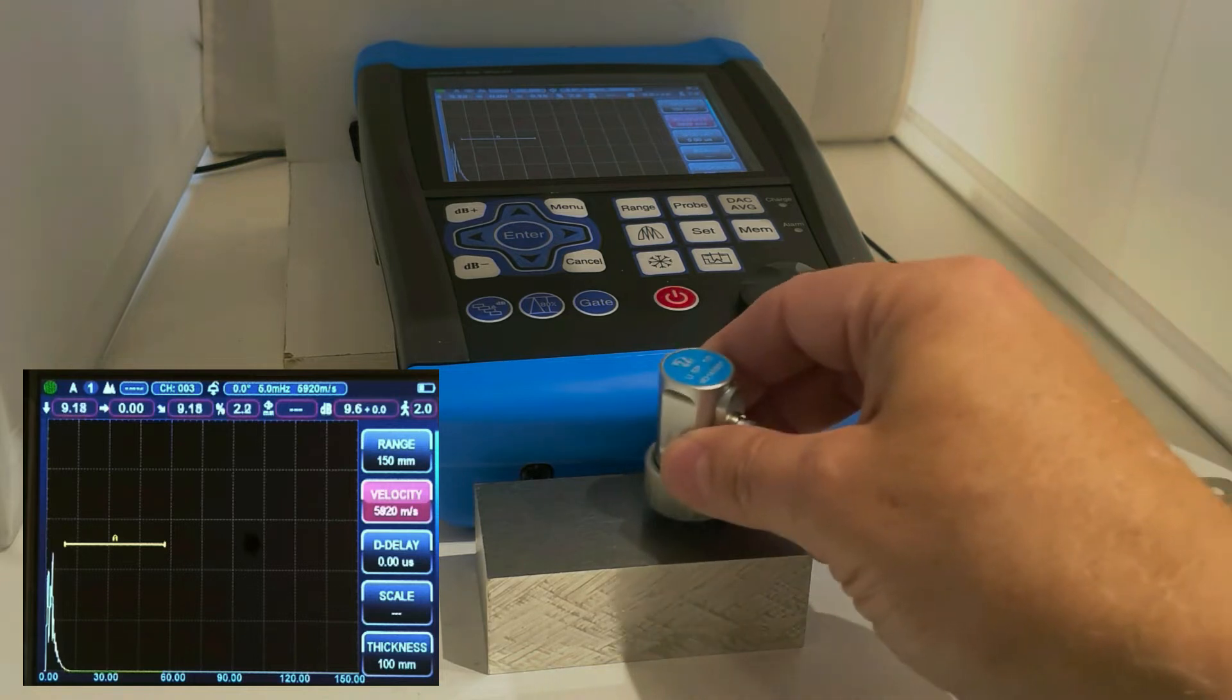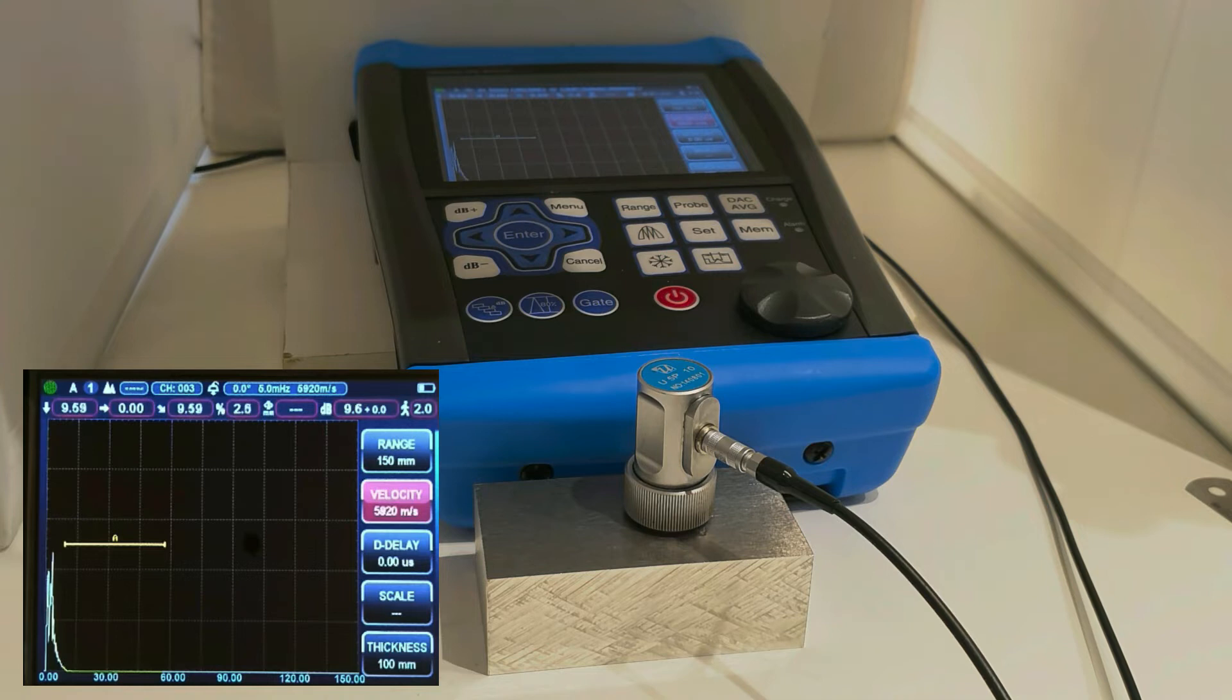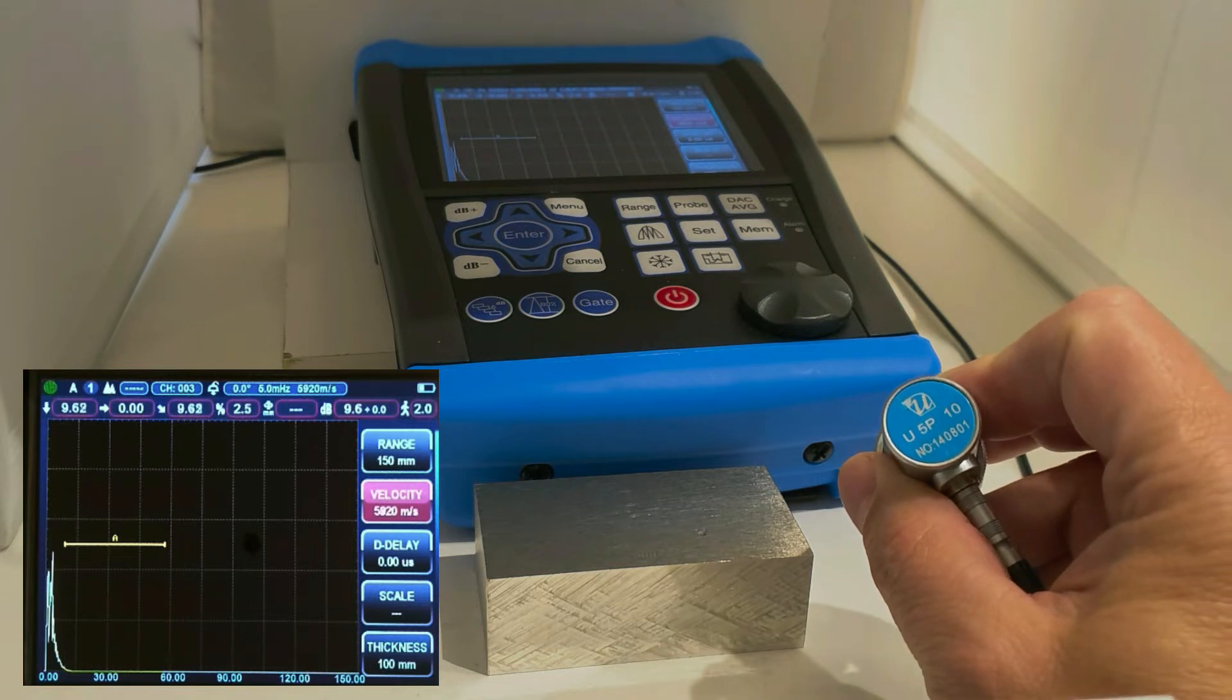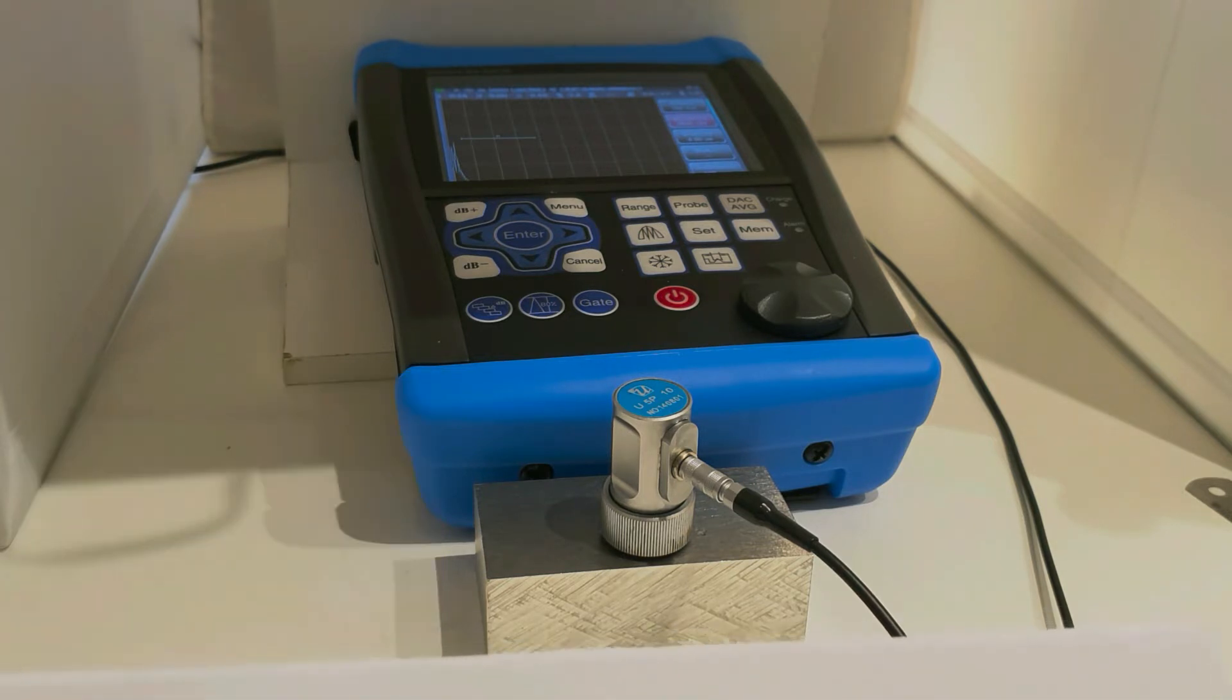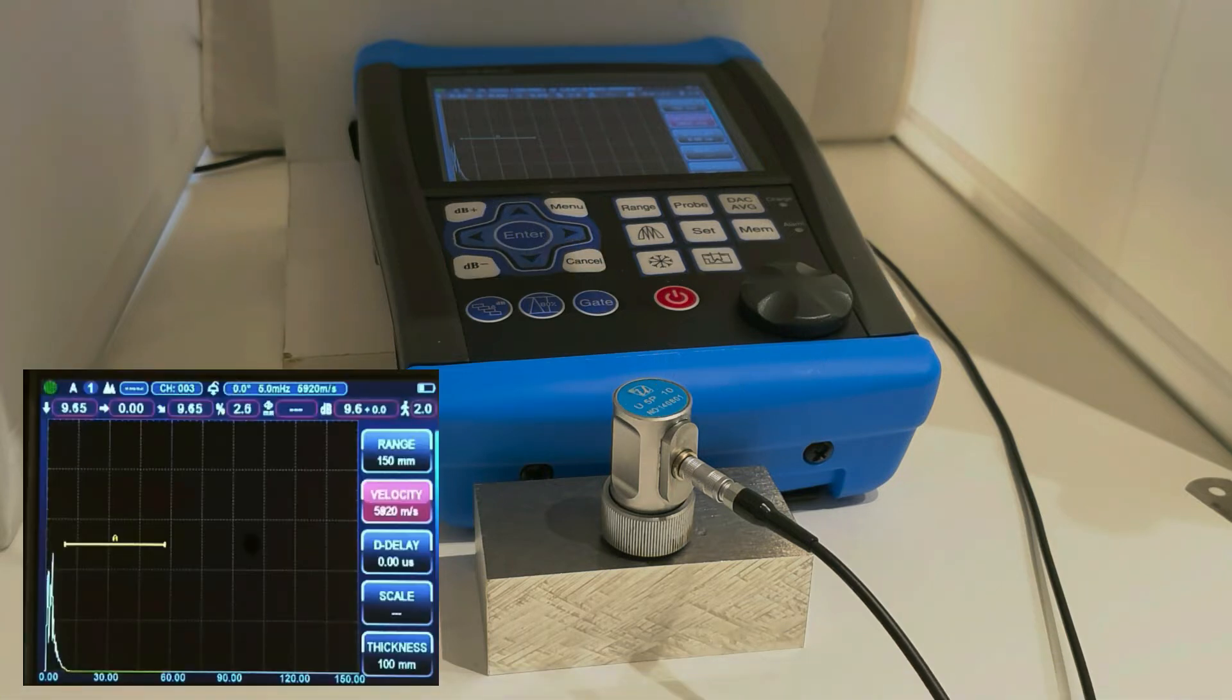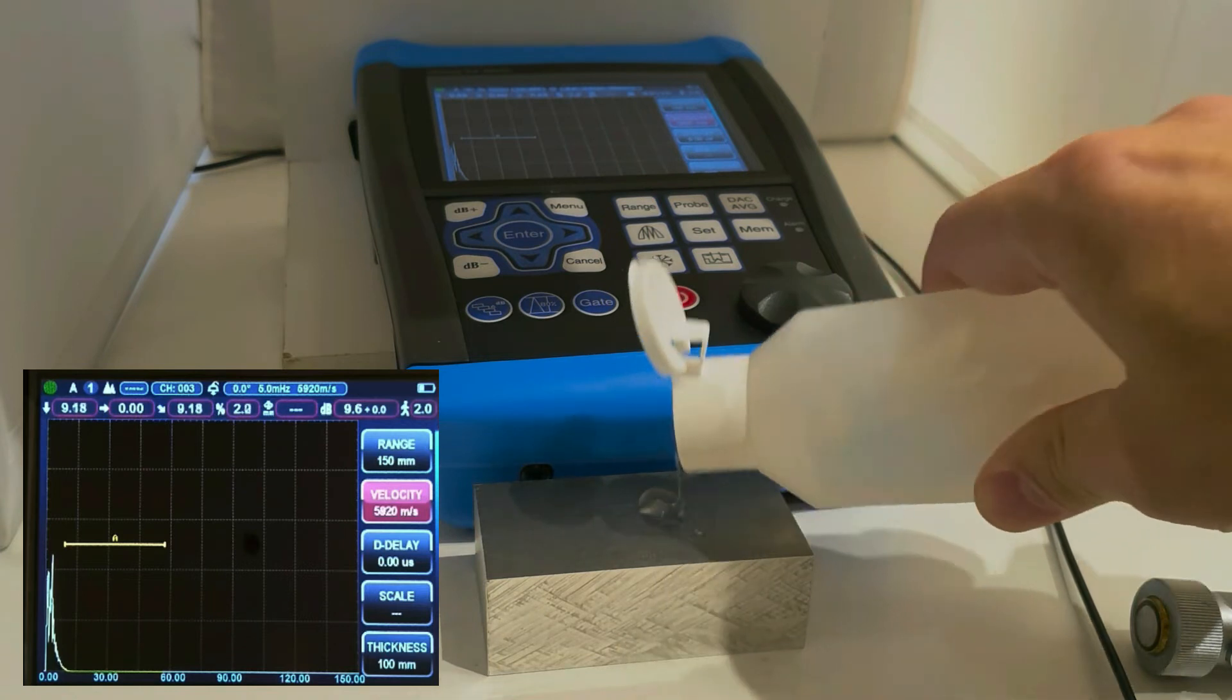When we place the probe on the test piece, we initially see no signal on the screen. This is because the oscillation, the vibration generated in the autosonic probe oscillates at a very high frequency. We use a 5 MHz probe. Such high frequency vibrations cannot propagate through the air into the material of the test piece, sound waves. Here we need a so-called coupling medium, a couplant, to acoustically connect the probe to the test piece. In this example, I'm using an ultrasonic gel, a high viscosity water-based couplant. And put a drop here.